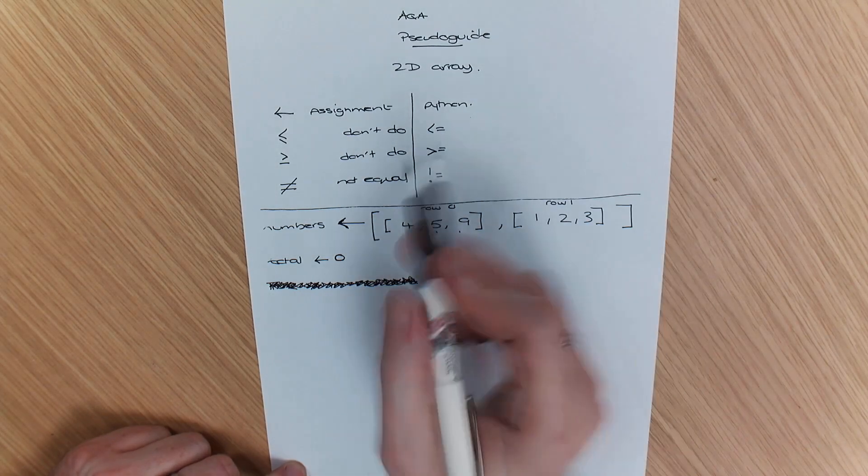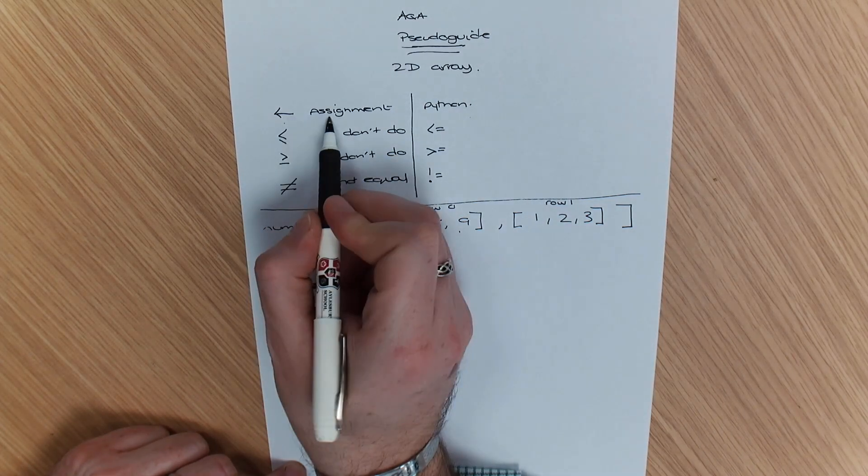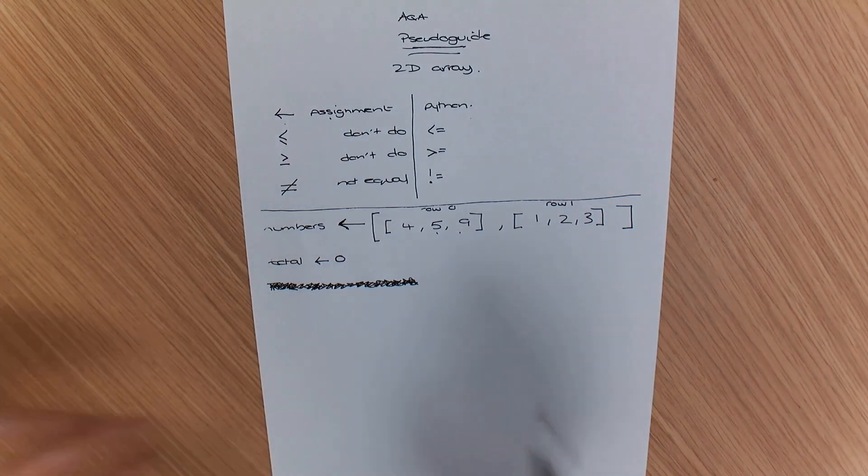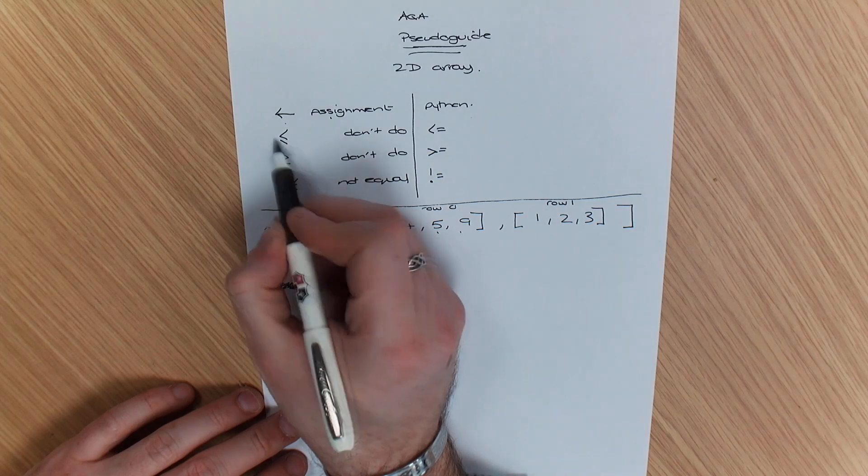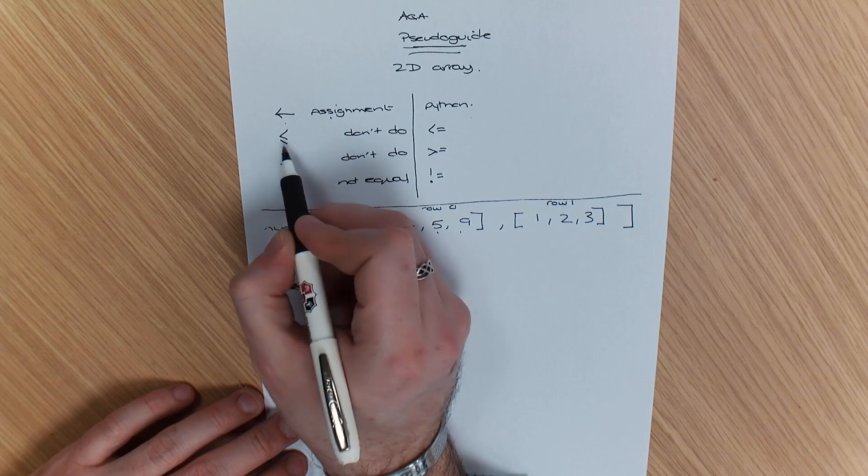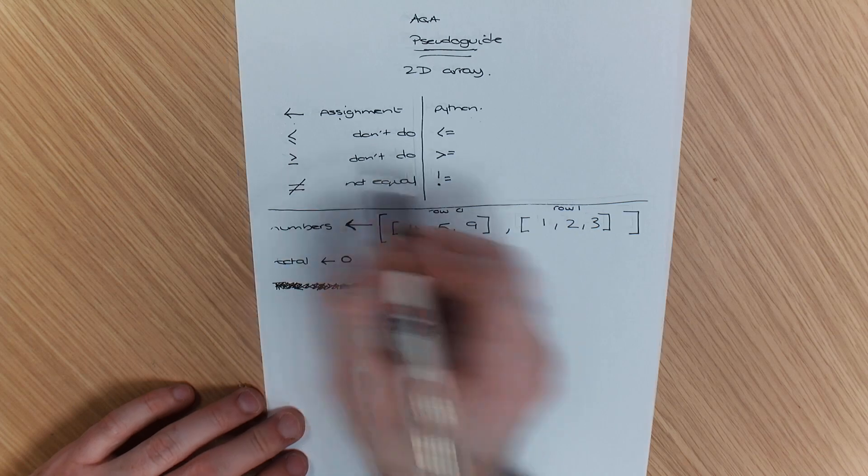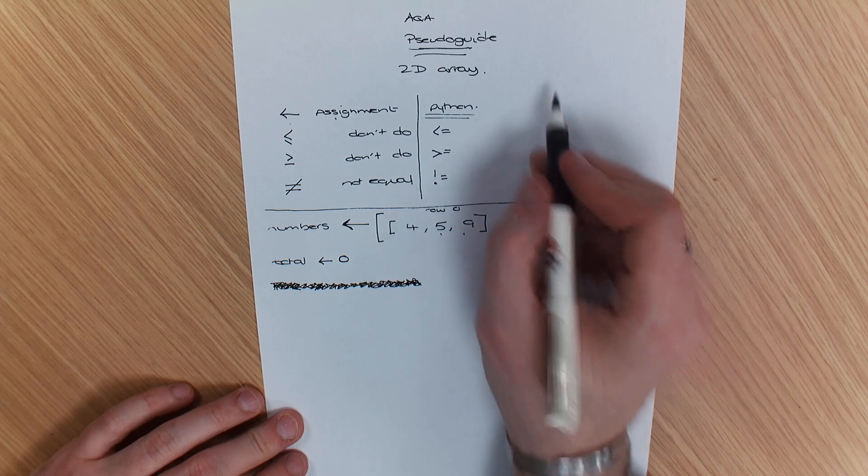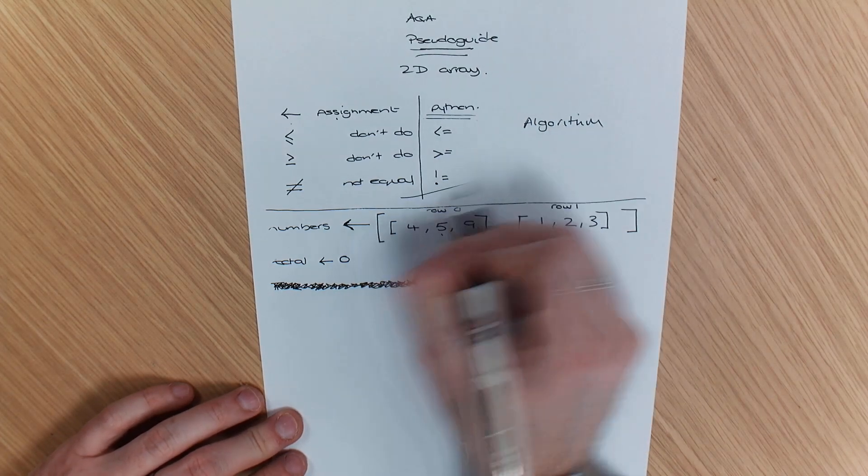So when you're writing in pseudocode, make sure that you use the arrow for assignment. So if I'm going to say name is equal to rate or number is equal to 1 and so on, use an underline of your less than symbol if you're going to do less than or equal to. Same with greater than or equal to. So there's the difference there. So that is Python.